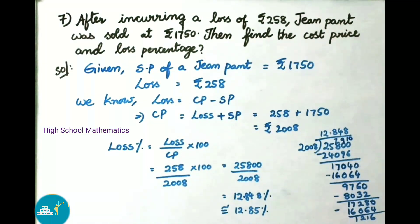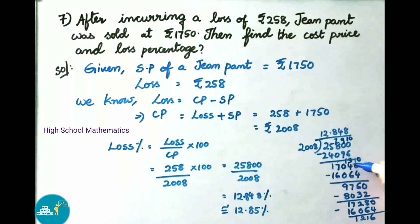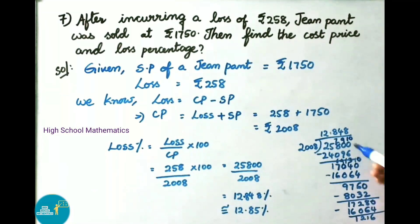2008 times 8 is 16064. Subtracting from 17040 with borrowing gives remainder 976. Since decimal is in place, we add a zero making it 9760. 2008 times 4 is 8032. Subtracting from 9760 with borrowing gives remainder 1728, which is less than 2008. Adding a zero gives 17280. 2008 times 8 is 16064. Subtracting gives remainder 1216.